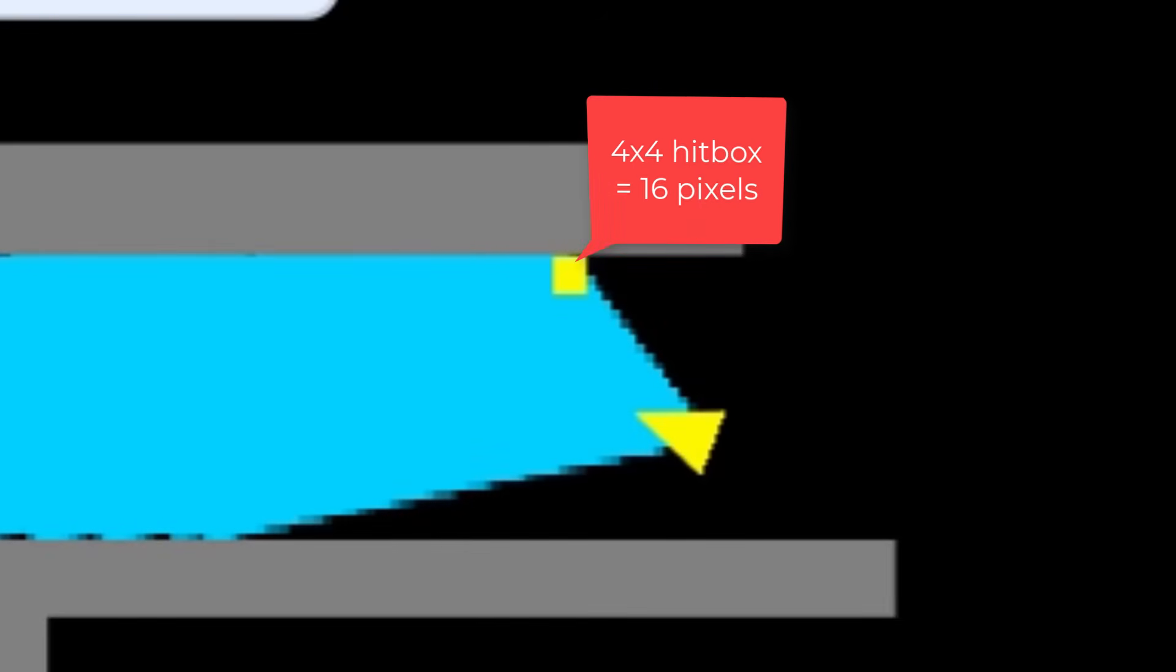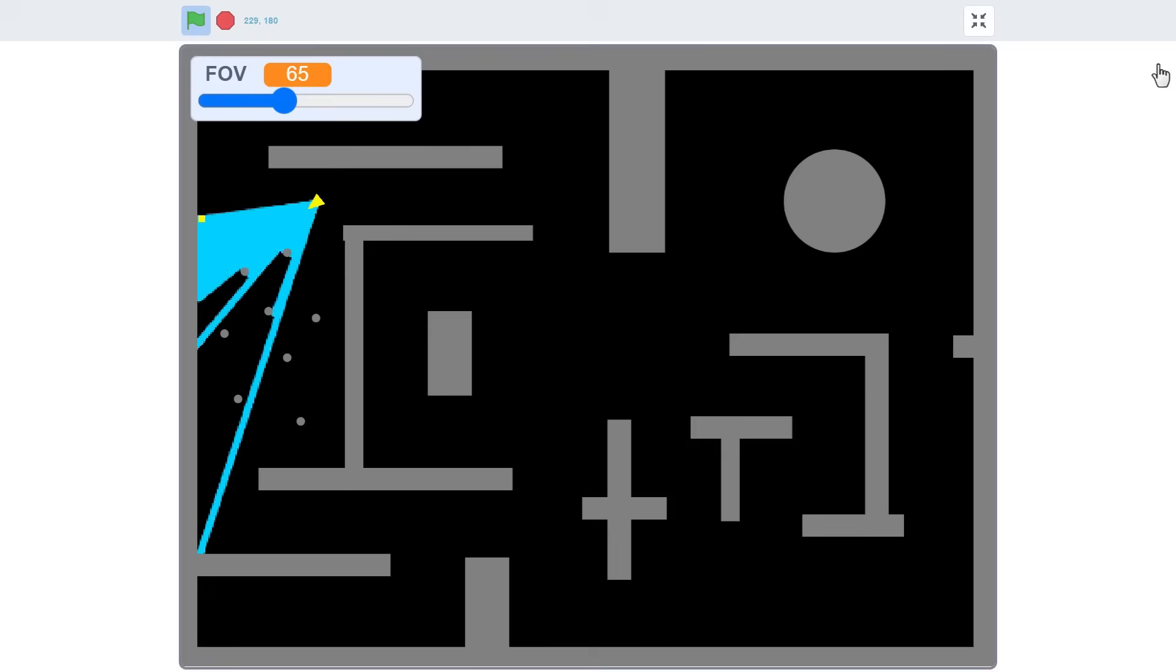Scratch needs to check all 4x4, that's 16 pixels, underneath to see if any of them are indeed touching the level. So, interesting question. What if we reduce the size of this scanner? Would it have a big difference on the raycasting speed?